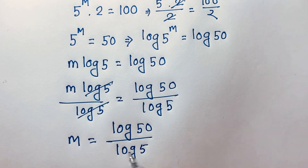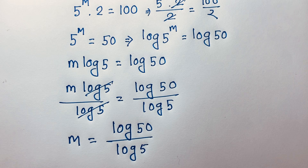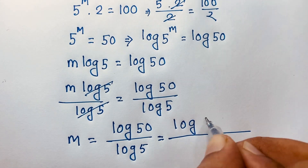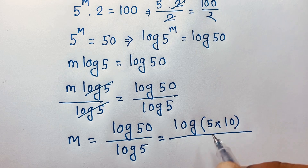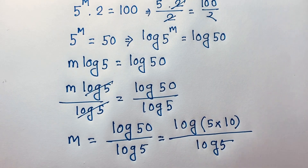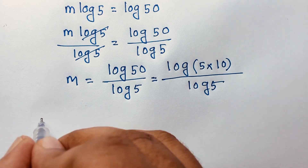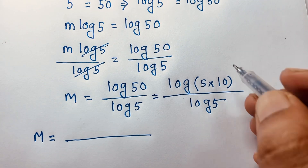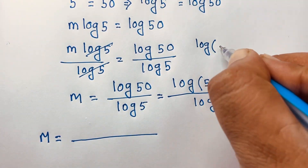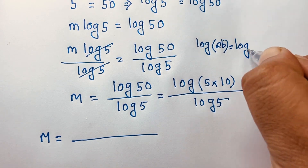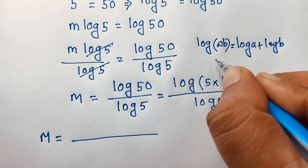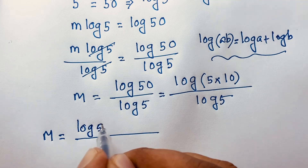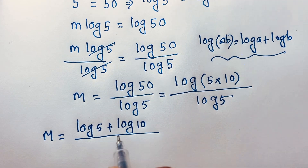This is the value of m in this exponential math problem. Now if I evaluate this expression, log 50 can be written as log of 5 times 10, over log 5. We know that log(ab) is equal to log a plus log b, so applying this formula it will be log 5 plus log 10, all over log 5.